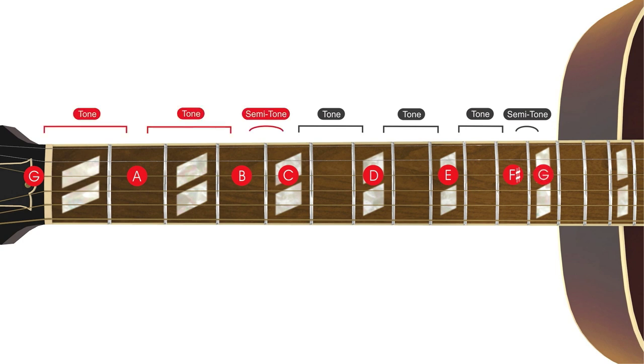Here again are the lower and upper tetrachords with the connecting tone, creating the G major scale from the C major scale.